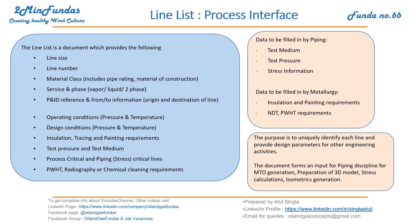Another important document which we receive from process is the line list. Line list is a document which provides the following information: line size, line number, material class including by printing, material construction, service and phase, pin ID reference, and from/to information — where this line is originating and where it is going. Everything is mentioned in the line list.